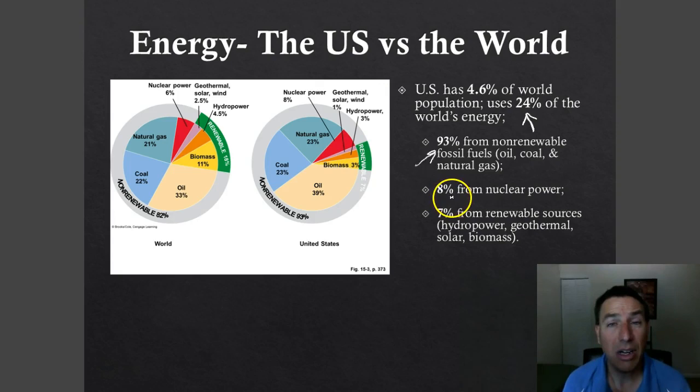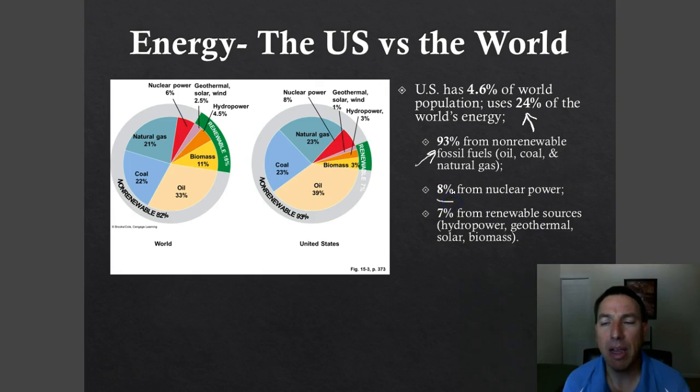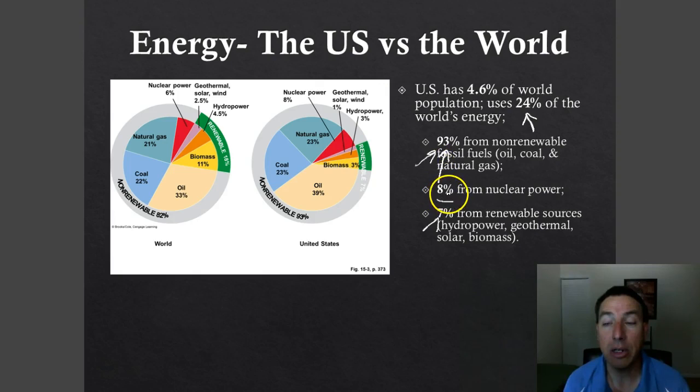A small percentage comes from nuclear power — 8% of our energy here in the United States. The remaining 7% comes from renewable resources: hydropower, geothermal, solar, and biomass. Keep in mind that nuclear power is also non-renewable, and we'll talk about why that is a little bit later.